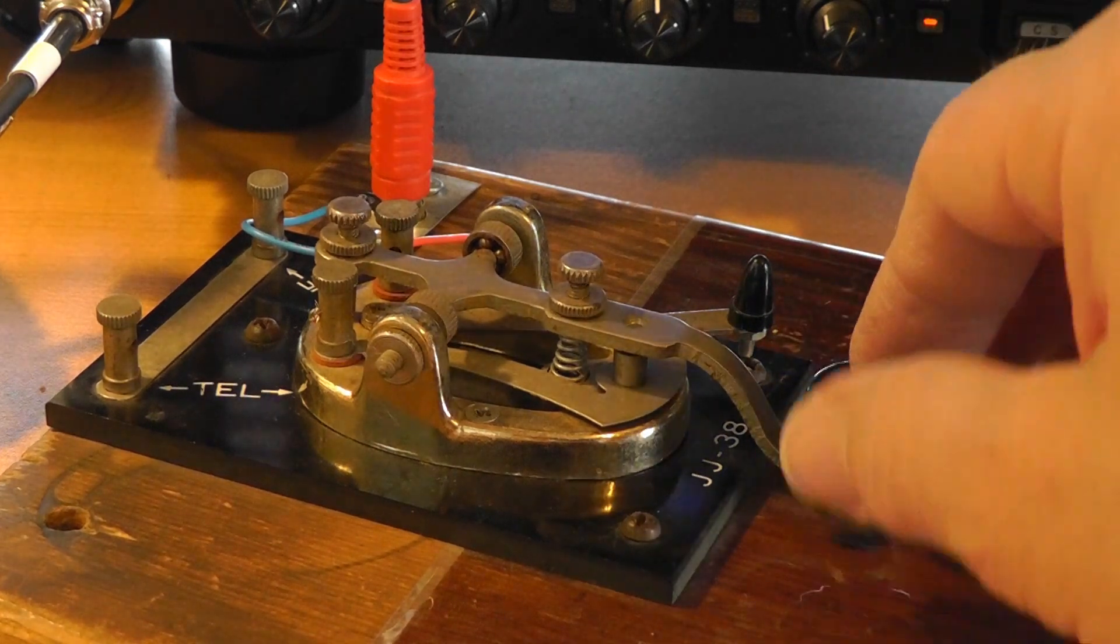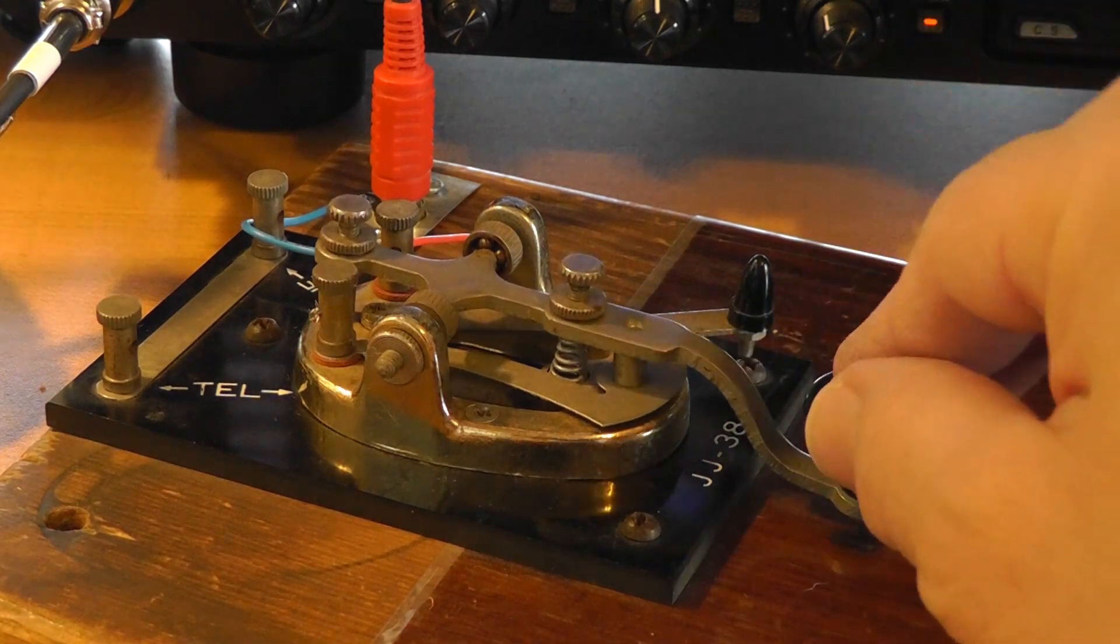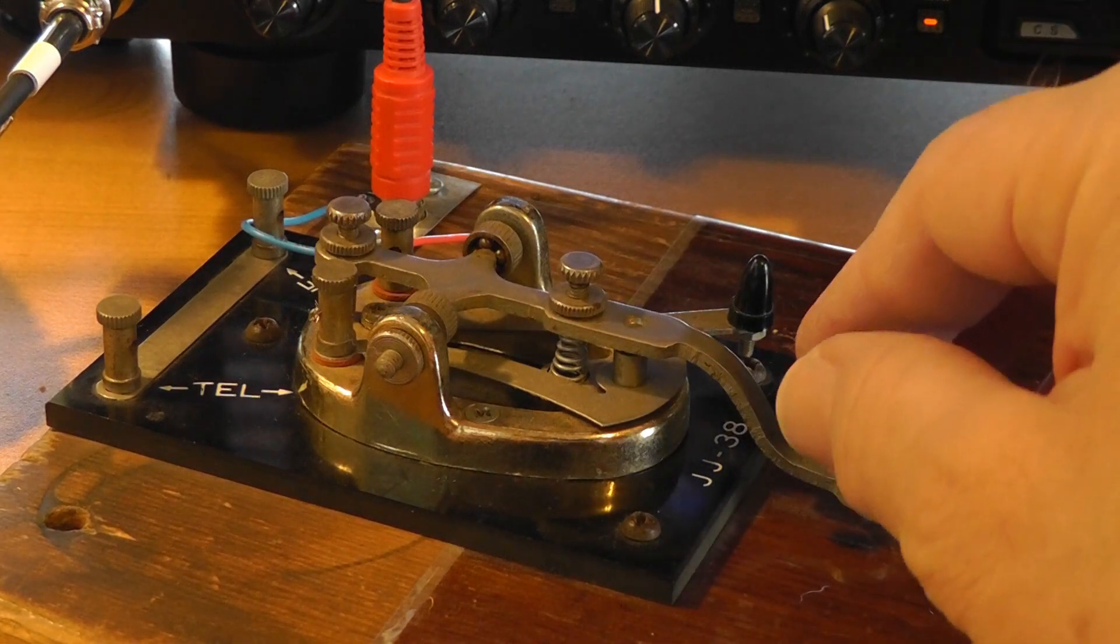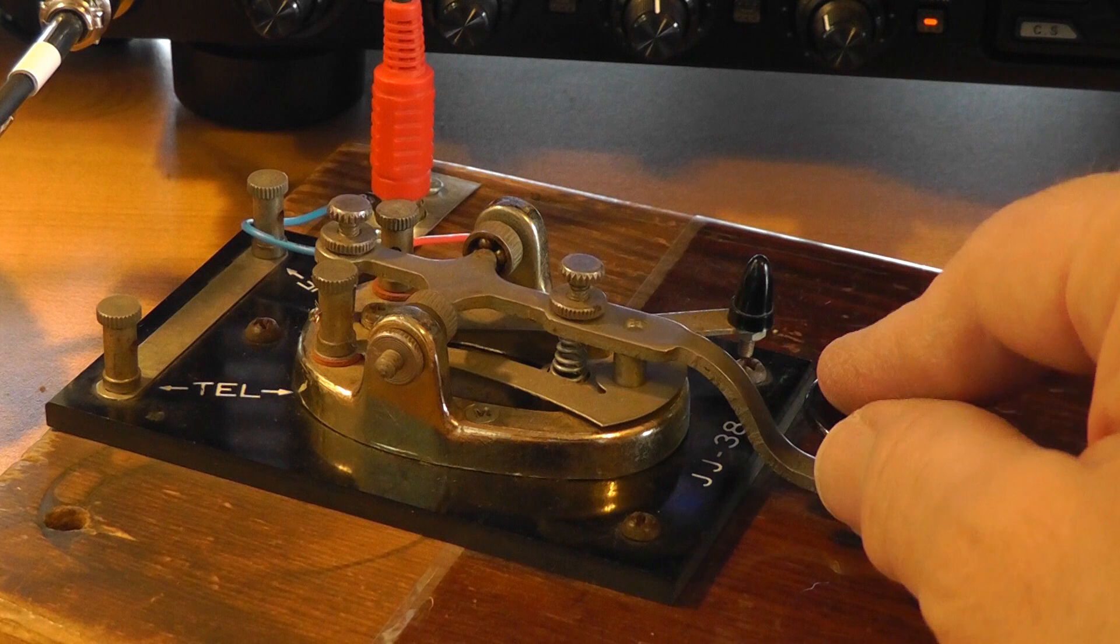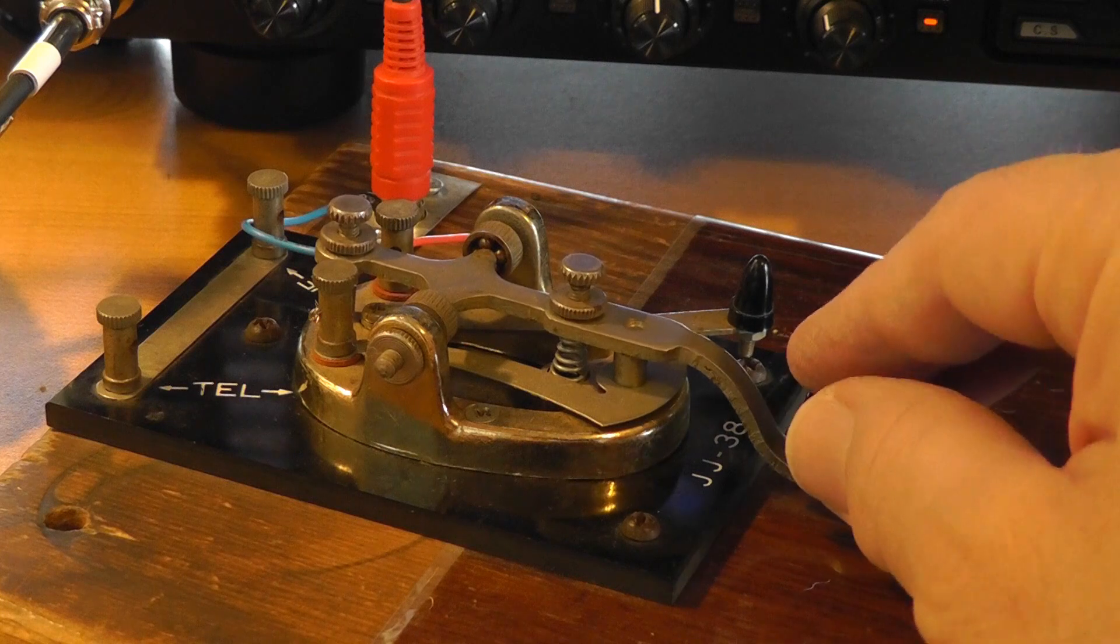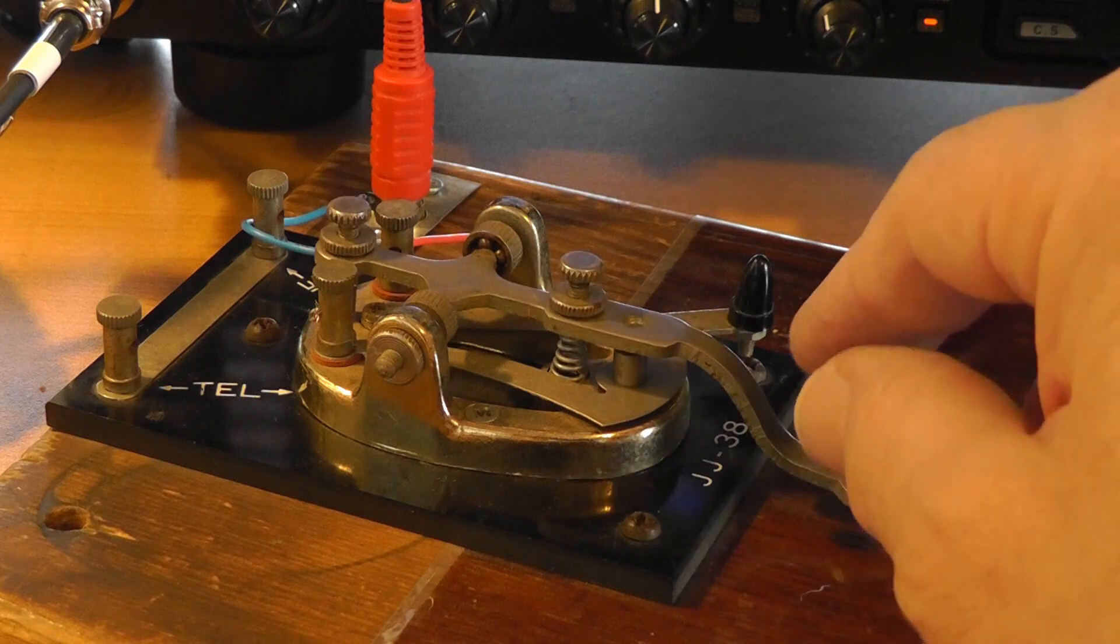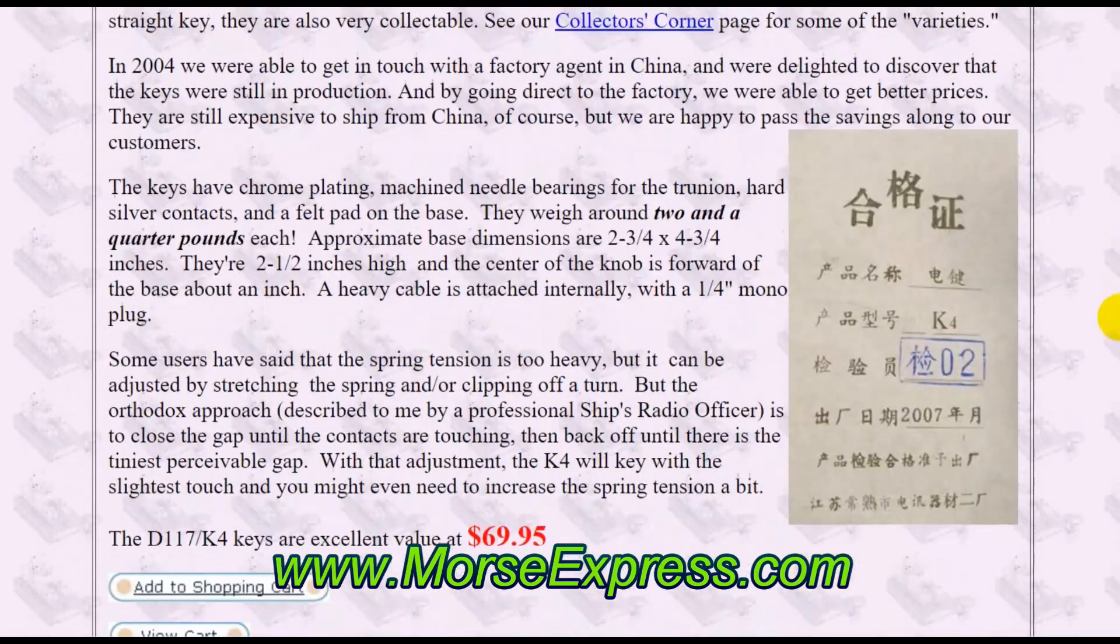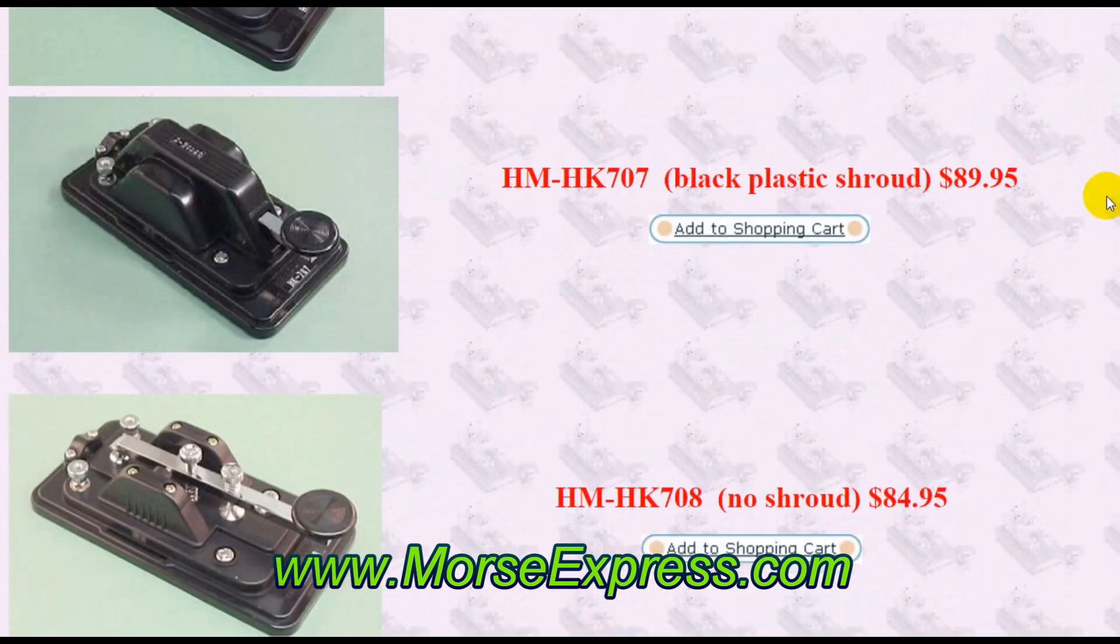We call a key like this a straight key, meaning a key using the original up and down action without modification. Note that making a dot or a dash with a straight key is entirely manual. Every operator uses a key slightly differently. Even back in the days of the early telegraph, telegraphers got to know each other by the distinctive sound of the code they sent, or what's called an operator's fist. Straight keys are readily available. You can find some great keys for under $100 at websites such as morsexpress.com. These keys can last a lifetime.